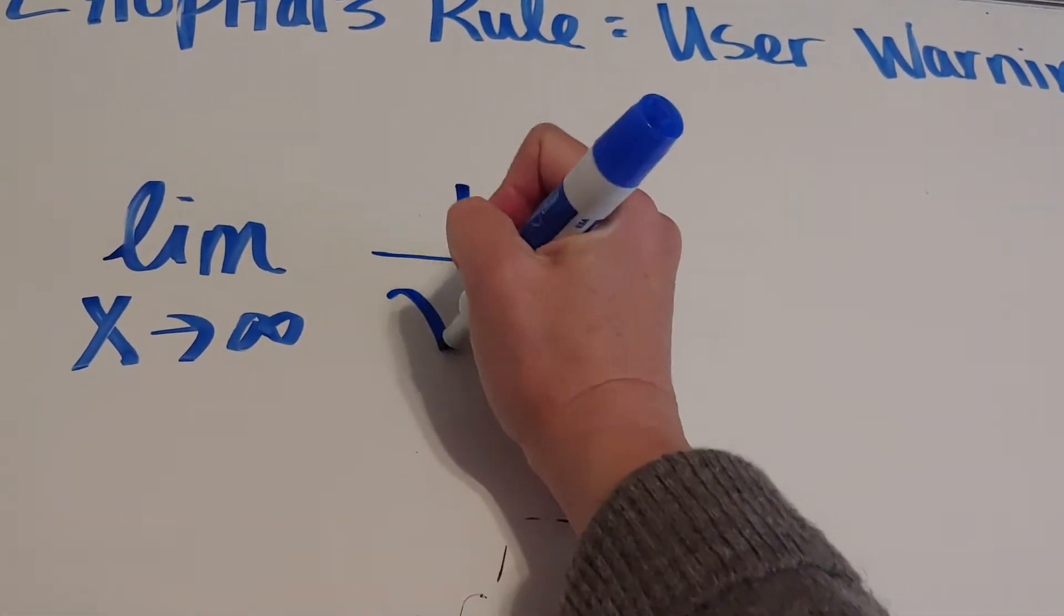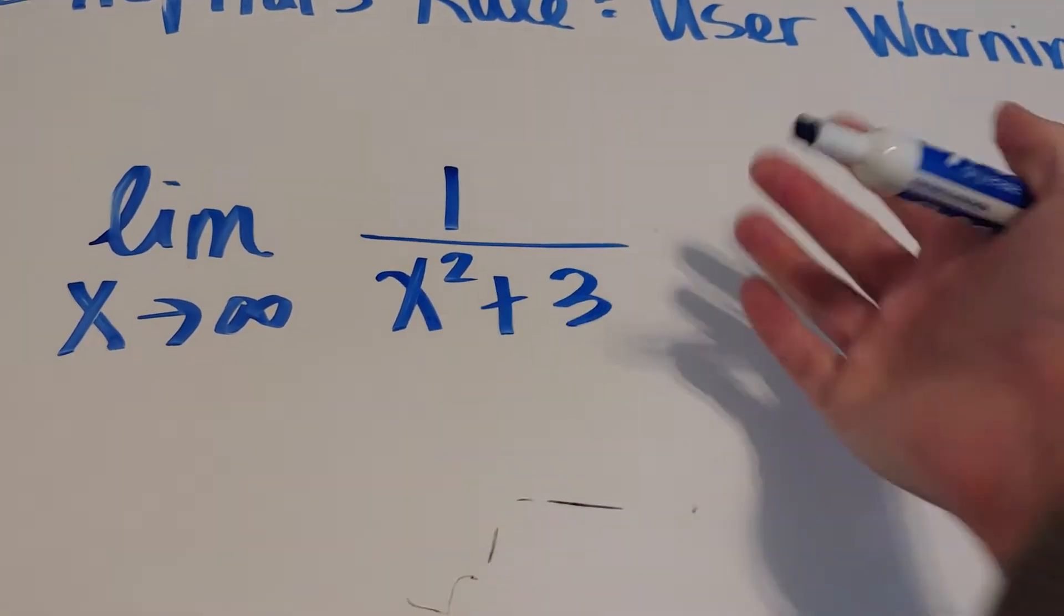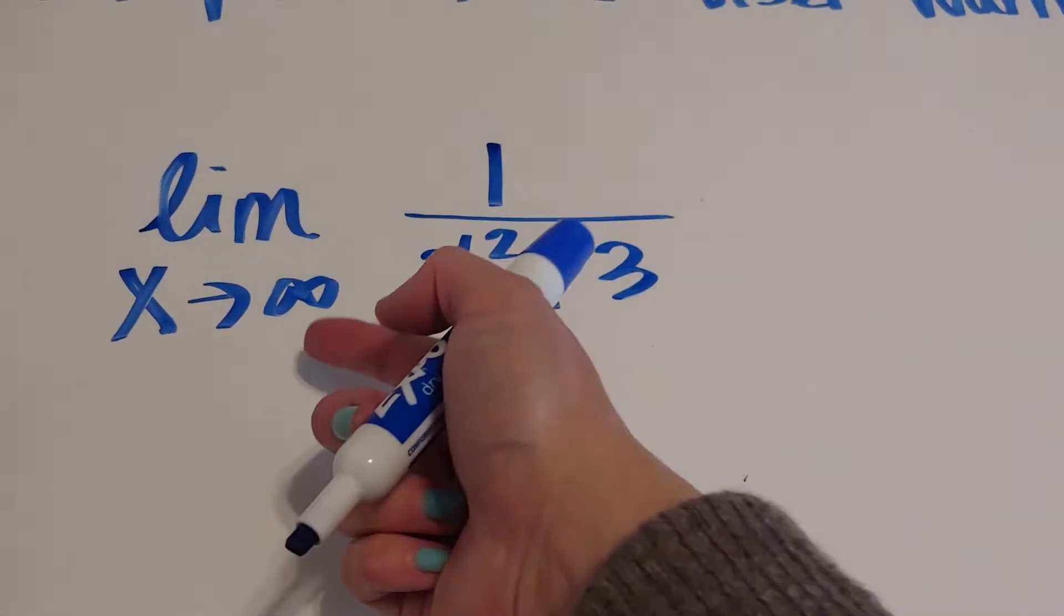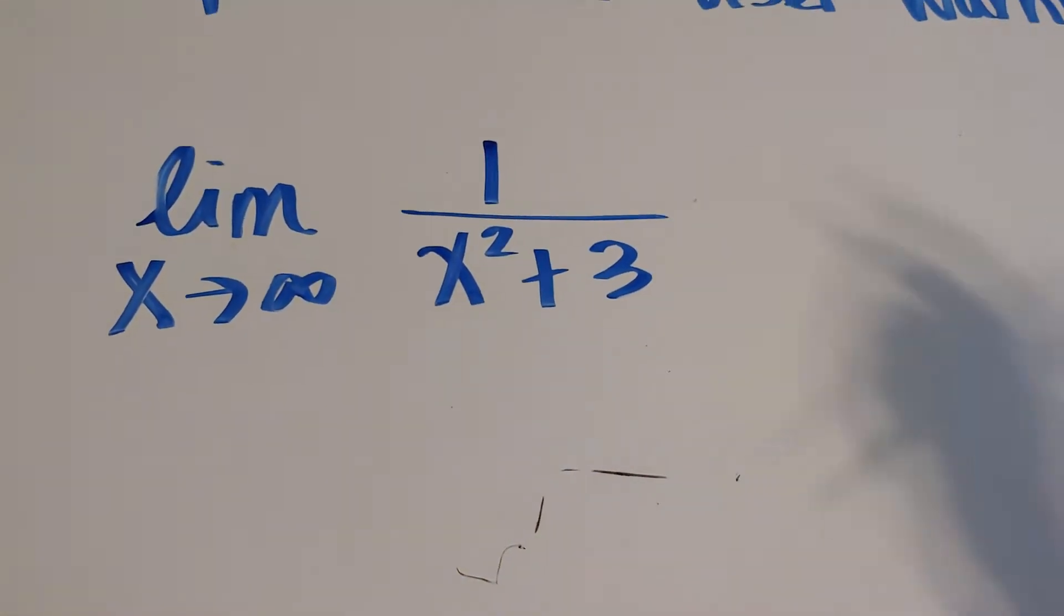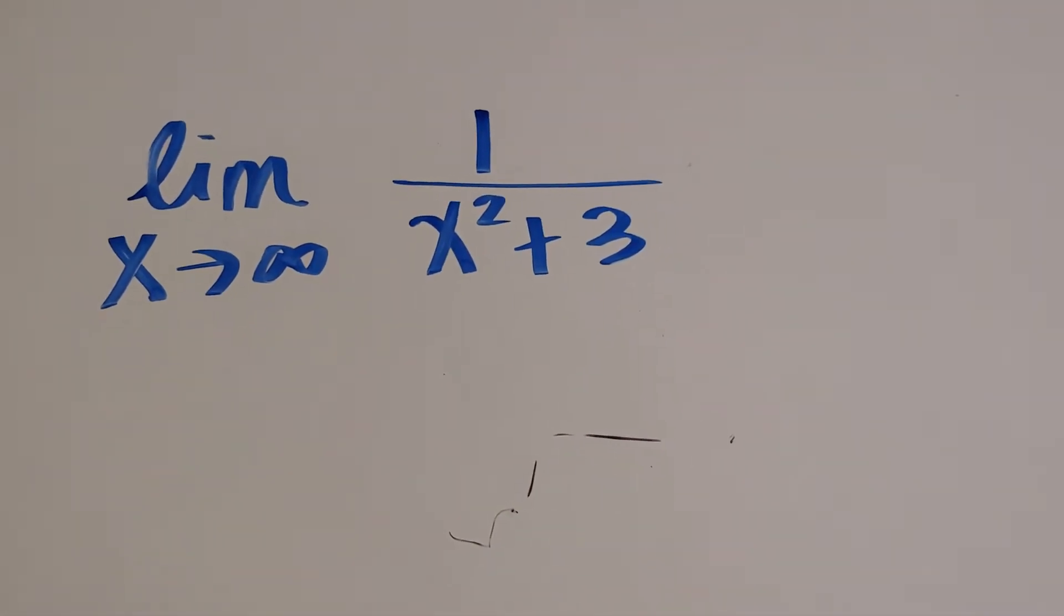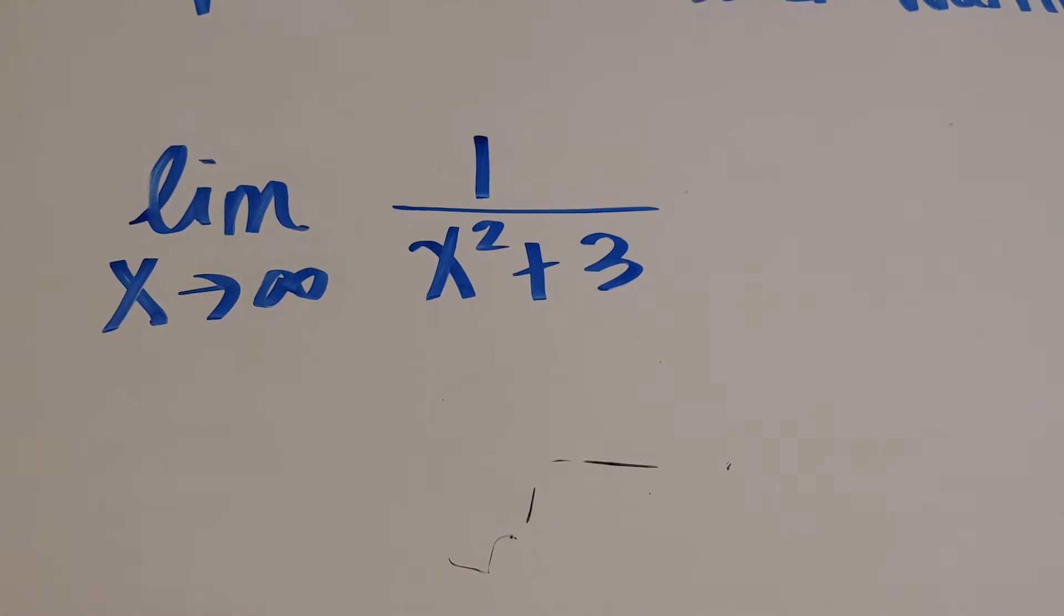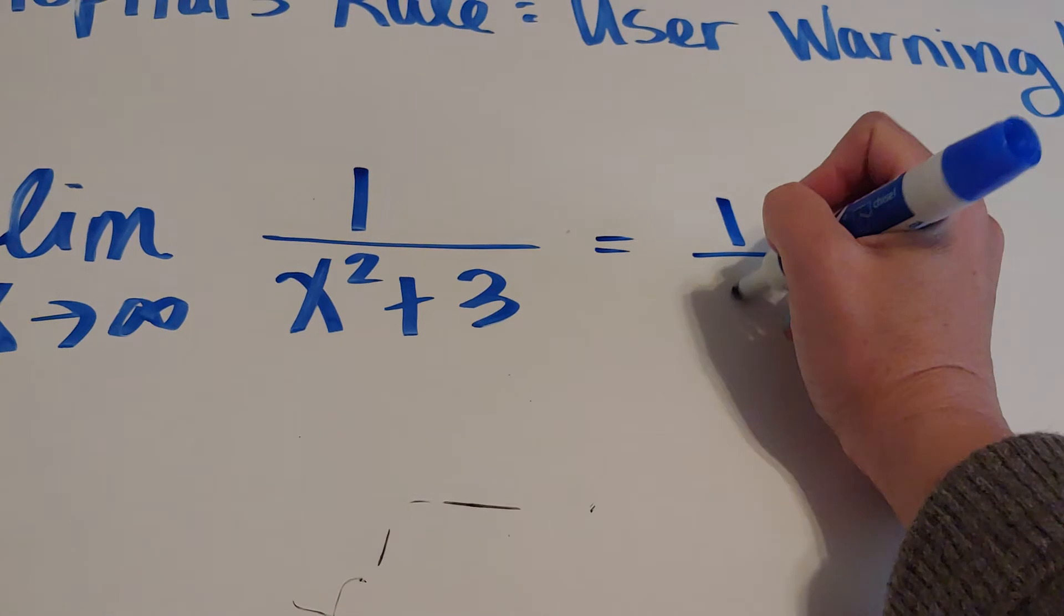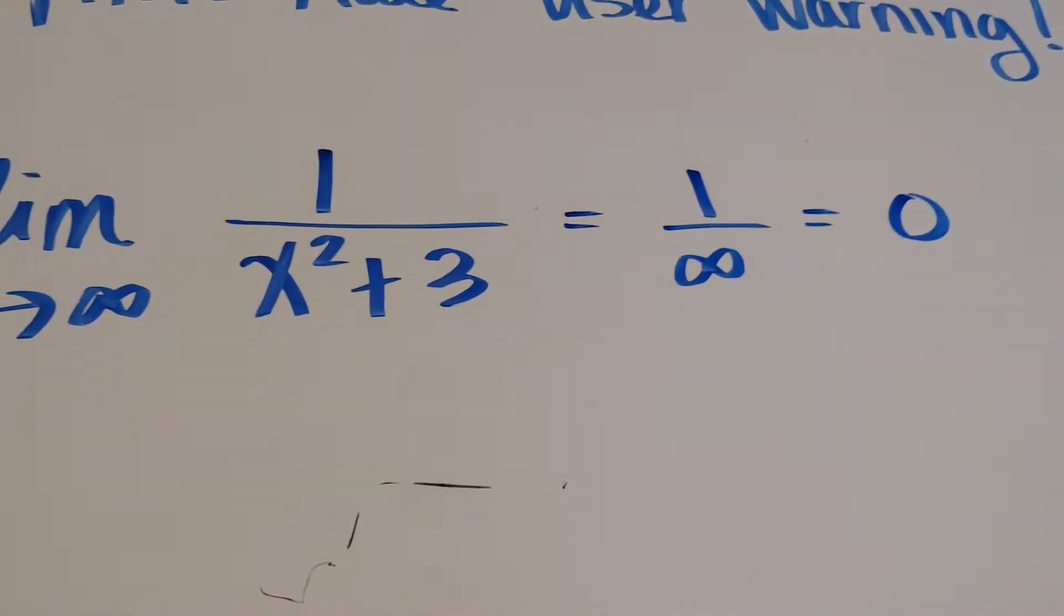For example, if you were given this, you can't use L'Hopital's Rule because if I plug in infinity, I get 1 over infinity squared or 1 over infinity. That's not infinity over infinity. So you are just expected to solve this as, 1 over infinity, that's the same thing as zero.